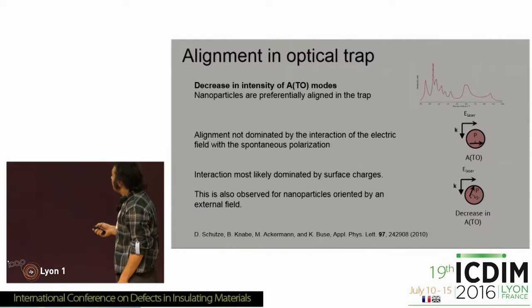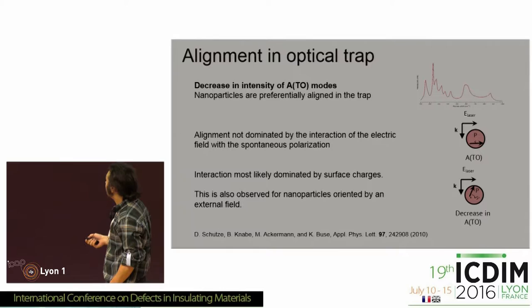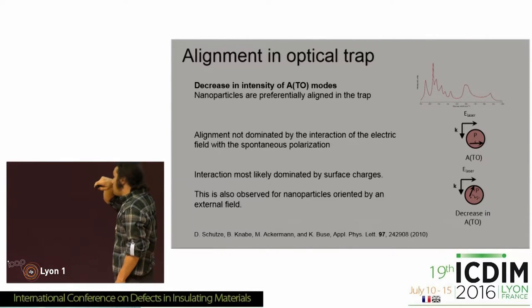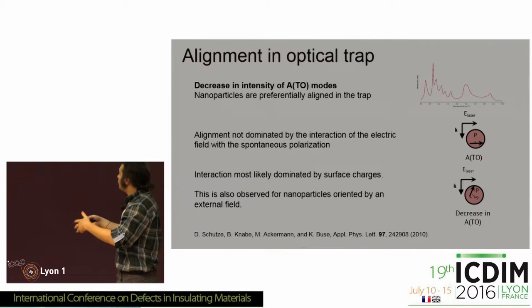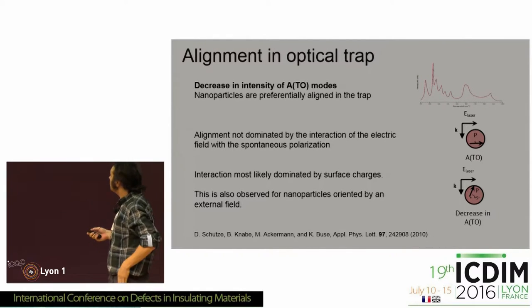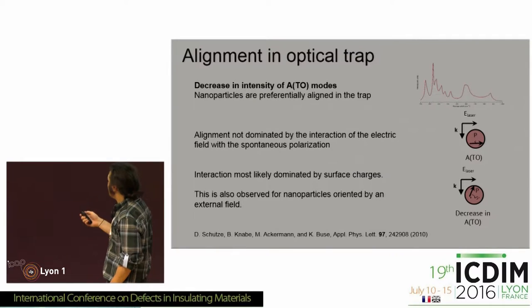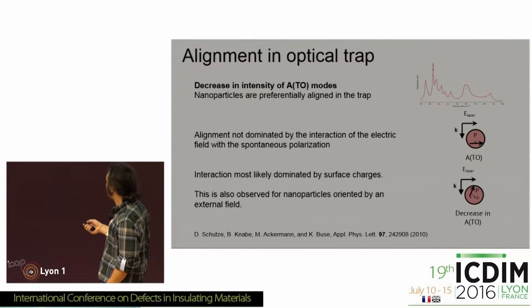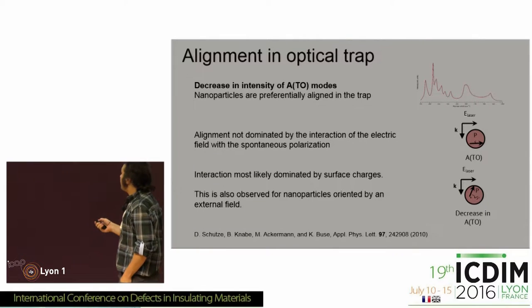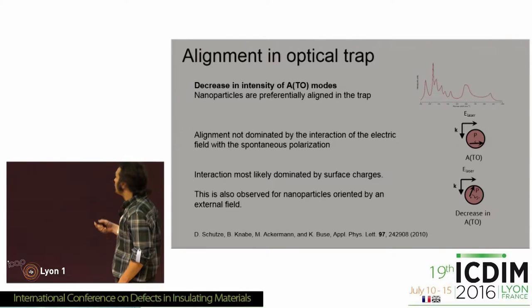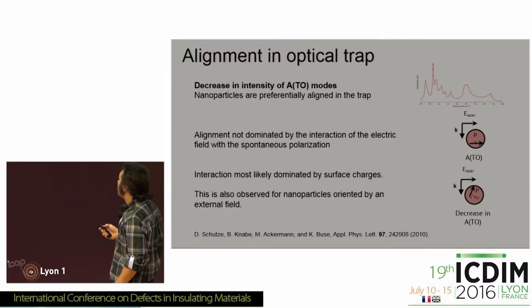That actually leads to the conclusion that the spontaneous polarization is aligning itself perpendicular to the polarization of the electric field of the light. That results in the decrease of the ATO modes and the presence of the ETO modes. This is consistent with the work our collaborators did, where they put the nanocrystals in a capacitor, looked at the refractive index change, and were able to extract the orientation. This has to do with the fact that the induced dipole moments are interacting most strongly with the electric field, more so than the spontaneous polarization.